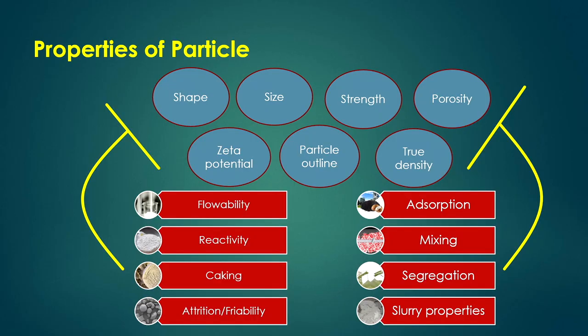Slurry properties are also affected. Adding more particles to a liquid forms a slurry; increasing slurry concentration increases its density. Viscosity of the slurry also increases — if you keep adding powder to a liquid, the stickiness of the mixture gradually increases, meaning viscosity increases. So slurry viscosity and density are both affected by particle properties and concentration.